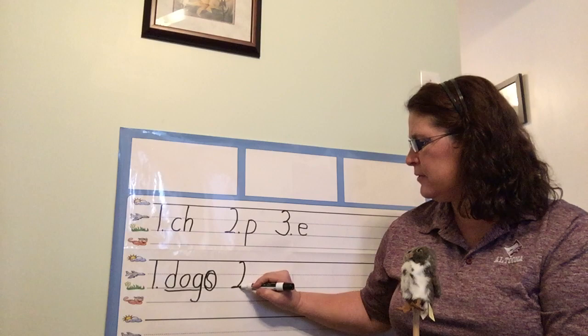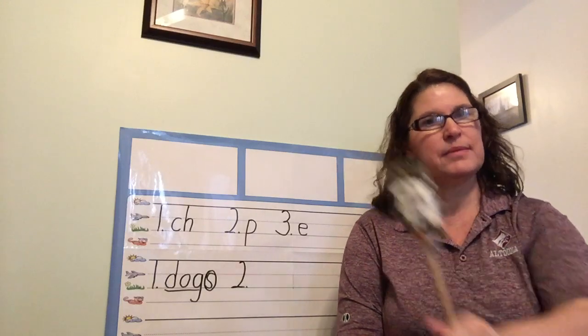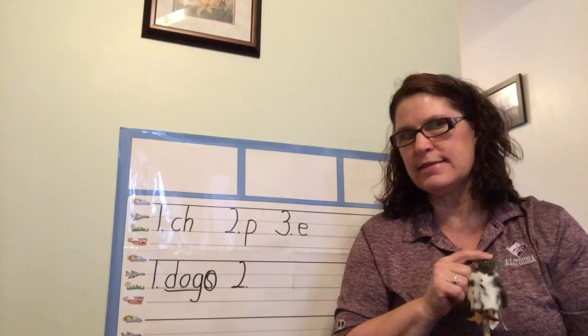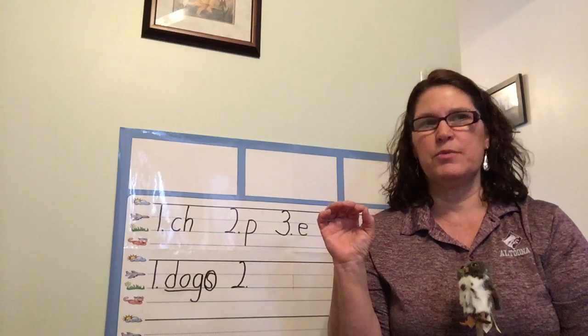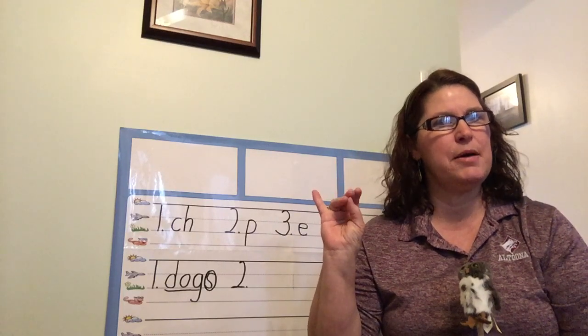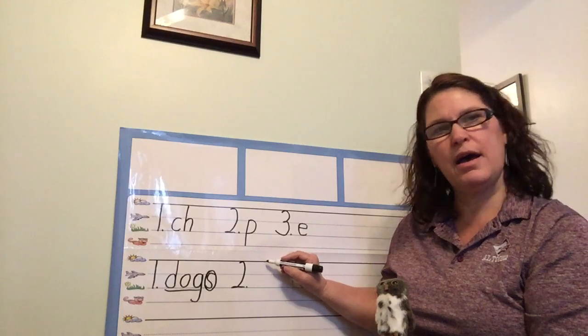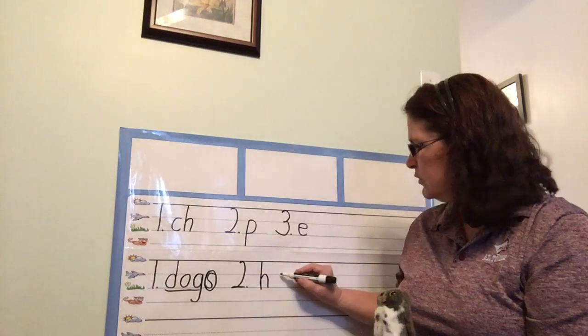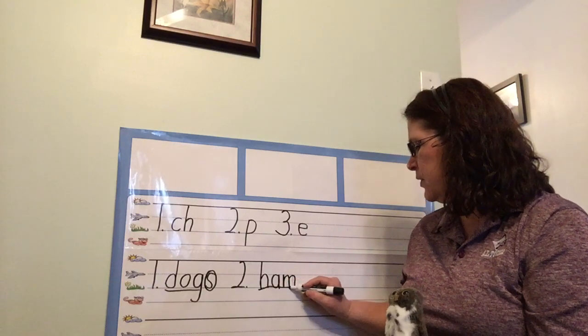Number two. Here we go. Find your number two and get ready. Say hams. I hear the suffix S at the end of hams. What's my base word? Ham. Let's tap out ham and then we can write it. Get ready. H-am. Ham. Remember, am is a glued sound. H-am. Ham. Let's write ham. You write it with me. H-am. Am is a glued sound. I know the am is a-m. Ham. I'm going to underline my base word.